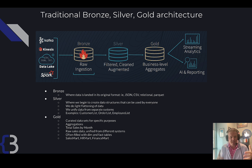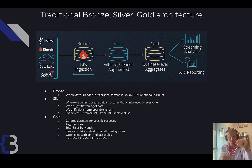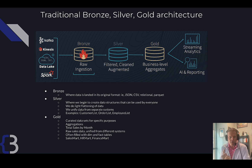Dates might be stored in 10 different ways. Numbers, money, and decimals might be stored in 10 different ways. As we move to the right of this diagram, the data gets cleaner and better organized. The silver layer is where we create common data structures like a unified customer list, a unified employee list, or a unified order list. This is where we make all the dates look the same and decide on what data types will be stored.